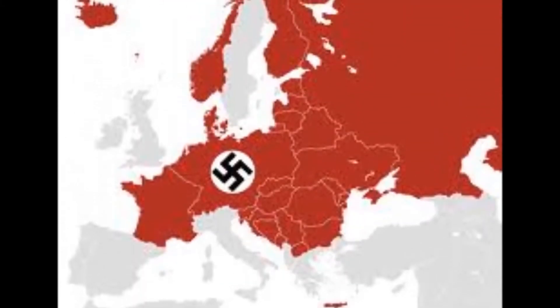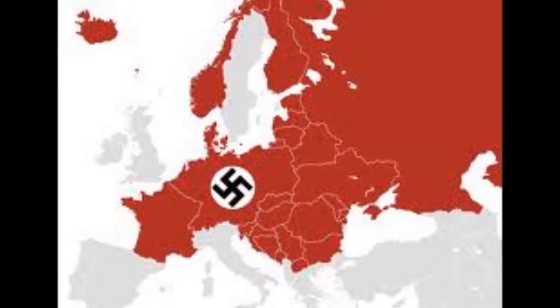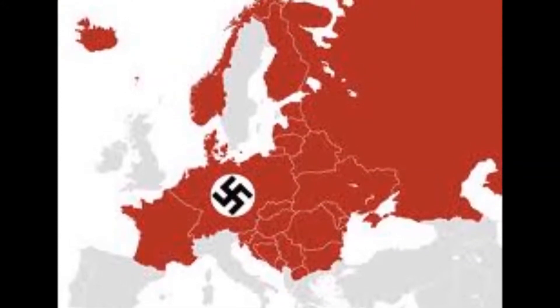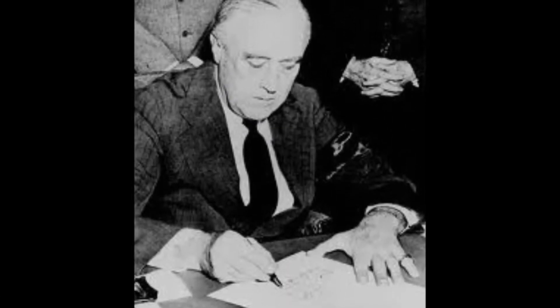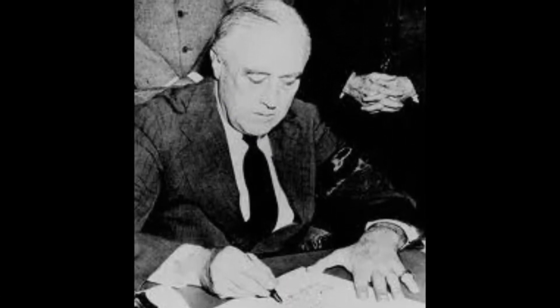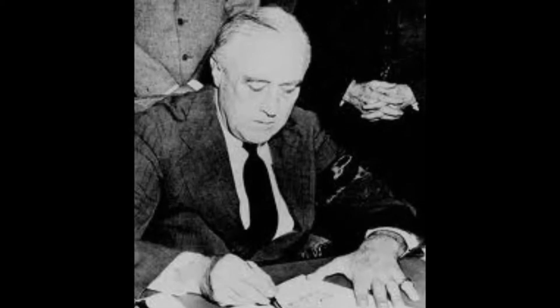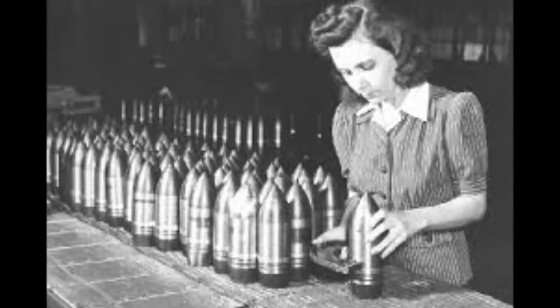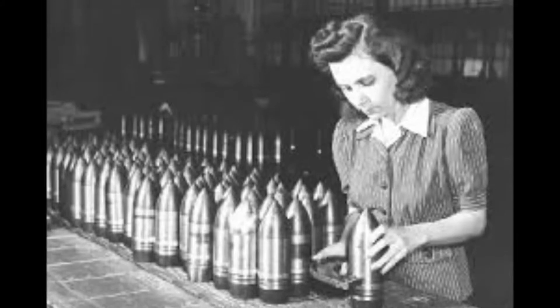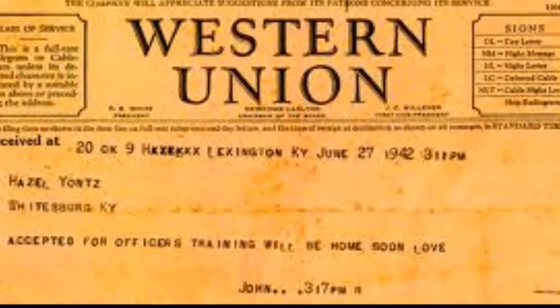As World War II broke out in Europe, controversial FBI Director J. Edgar Hoover convinced President Roosevelt to let the FBI resume wiretapping in cases involving national security. It is now known that J. Edgar Hoover used the information that he gathered to discredit politicians who were trying to limit the power of the FBI, and this continued throughout his 48-year history as the Director of the FBI.